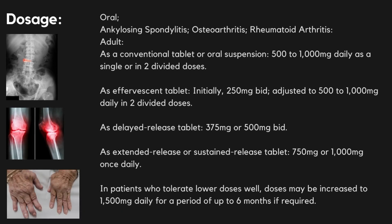Oral dosage for ankylosing spondylitis, osteoarthritis, and rheumatoid arthritis. Adult: as a conventional tablet or oral suspension, 500–1000 mg daily as a single dose or in divided doses. As an effervescent tablet, initially 250 mg two times a day, adjusted to 500–1000 mg daily in divided doses. As a delayed-release tablet, 375 mg or 500 mg two times a day. As an extended-release or sustained-release tablet, 750 mg or 1000 mg once daily. In patients who tolerate lower doses well, doses may be increased to 1500 mg daily for a period of up to 6 months if required.